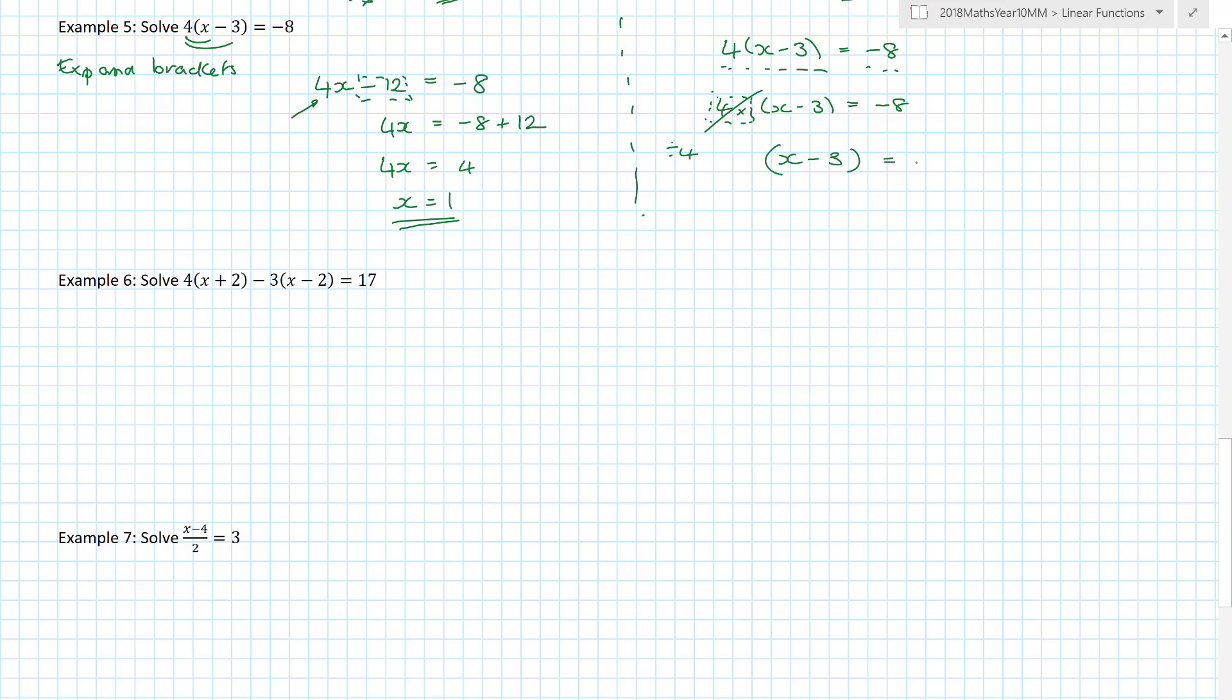It only works when I've got one term on one side and one term on the other. I divide both sides by 4. That disappears and I get x minus 3 in brackets equals minus 8 divided by 4. There's no point having the brackets now because there's nothing outside. x minus 3 equals minus 2. I can now just add 3 to both sides to get x equals 1. This is actually quicker.